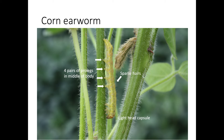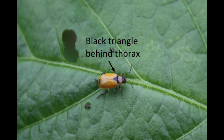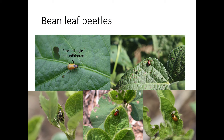Bean leaf beetles are part of the defoliating beetle complex. Adults are almost always present in soybean fields and sometimes cause economic injury. Bean leaf beetles can be tan, red with spots, without spots, or other colors, but all bean leaf beetles will have a rear-facing black triangle on the wings just behind the thorax. These beetles damage soybean plants by chewing holes in leaves and may occasionally feed on pods. Holes in leaves are roughly spherical in shape. Early season infestations are often concentrated in the first soybeans to emerge, especially if the seed was not treated with an insecticide seed treatment. However, most economic damage is caused by defoliation of larger beans from later generations.